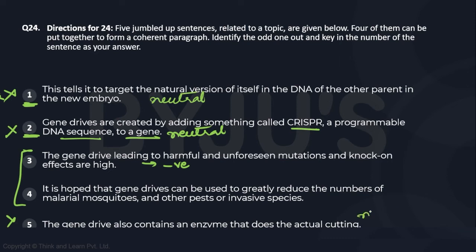Sentence 4 presents a hope — based on the uses described, we hope that gene drives can be used to greatly reduce the numbers of malarial mosquitoes and other pests or invasive species. Sentence 3, however, suddenly talks about negatives — that it's leading to harmful and unforeseen mutations and knock-on effects — which is likely off track for this paragraph.